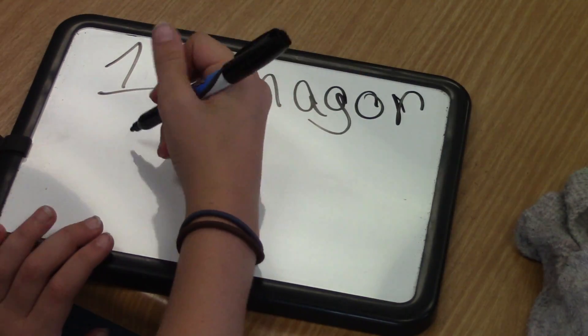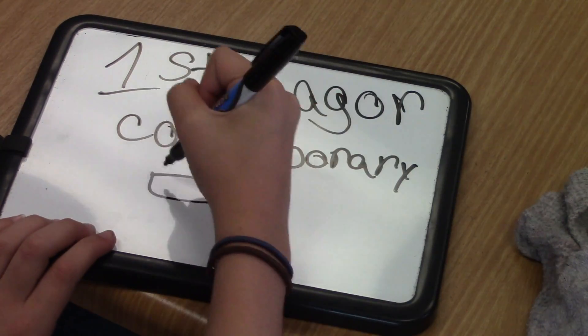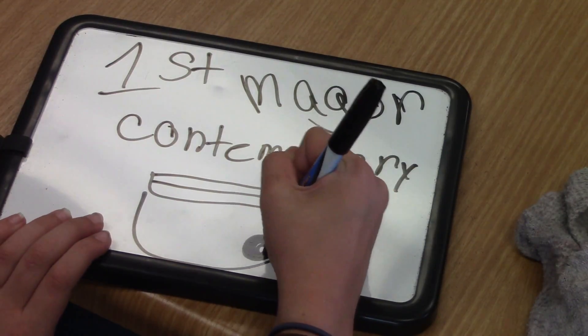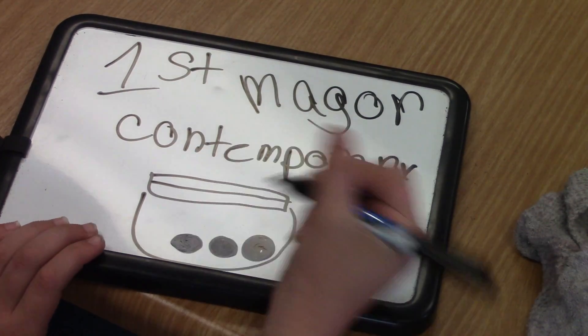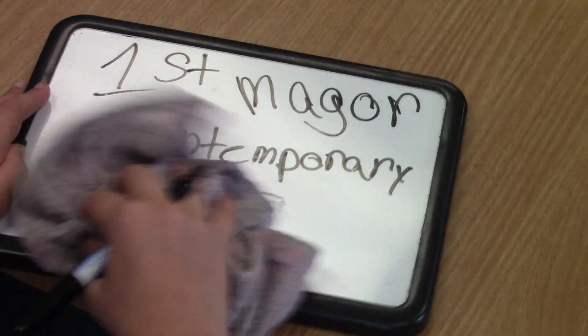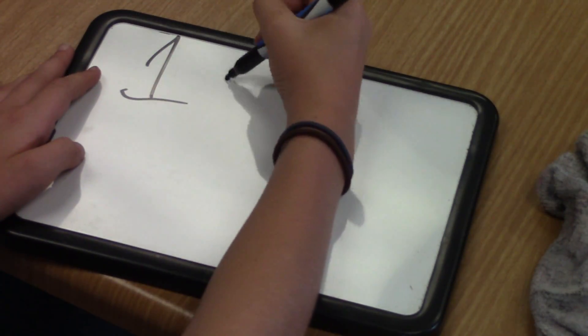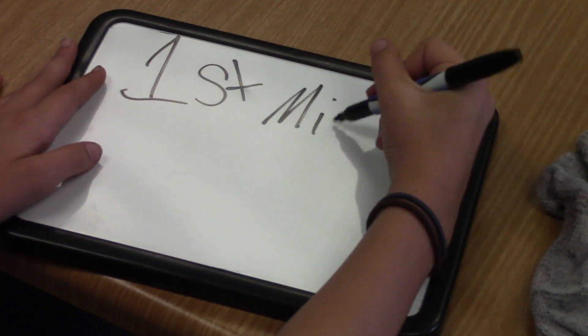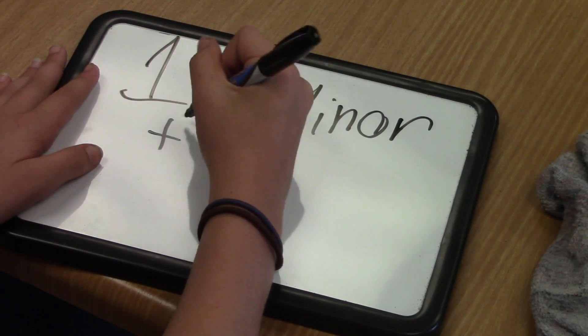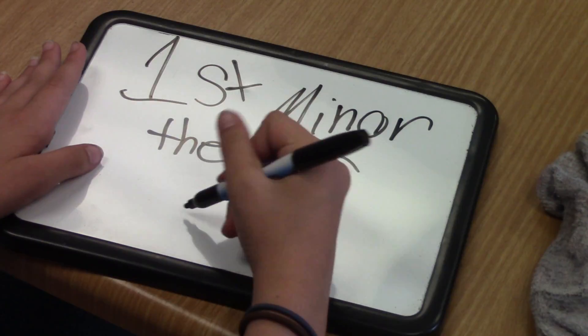Then I went back to my cabin to get ready for my first major which was contemporary. Then I went to my first minor which is theater and we sang some songs. We sang a song from Matilda, 'When I Grow Up,' and the song from Ariel, 'Part of Your World.'